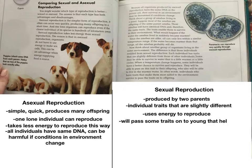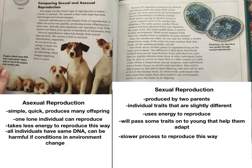In contrast, individuals from sexual reproduction each have slightly different traits. When the environment changes, some individuals may be better suited to survive and pass on their traits to offspring who can also live in the changed conditions. So asexual reproduction is simple, quick, produces many offspring, requires only one individual, and takes less energy - but all individuals have the same DNA, which is a disadvantage if the environment changes. Sexual reproduction has two parents, everyone is a little different, it takes more energy and is slower, but some traits can help offspring adapt to environmental changes.